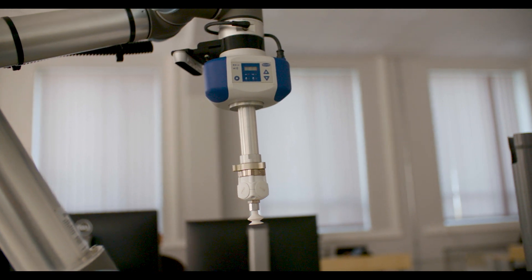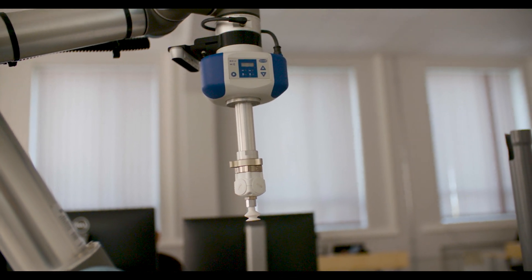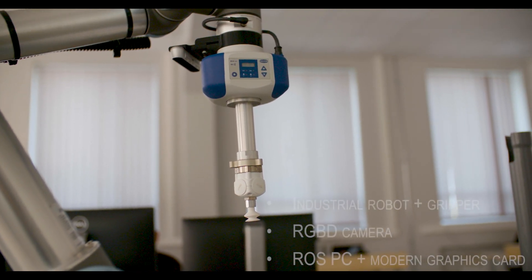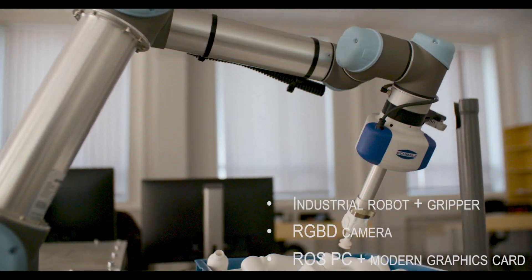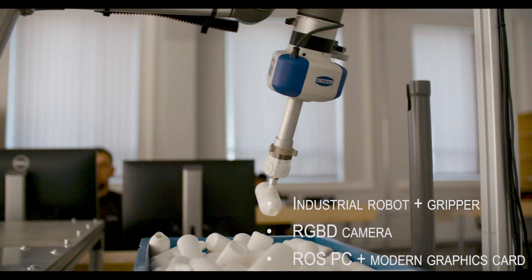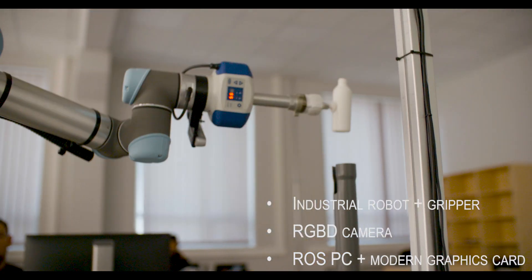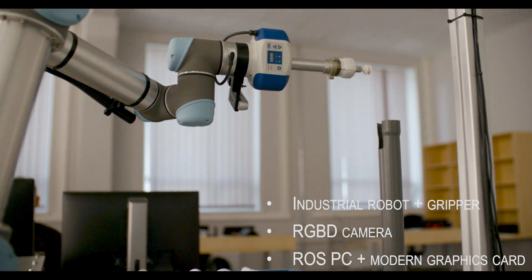Investments. Bare minimum hardware that is necessary to run presented modules is industrial robot with a gripper, vacuum gripper or parallel gripper, RGBD cameras, and robot operating system PC with a modern graphics card.